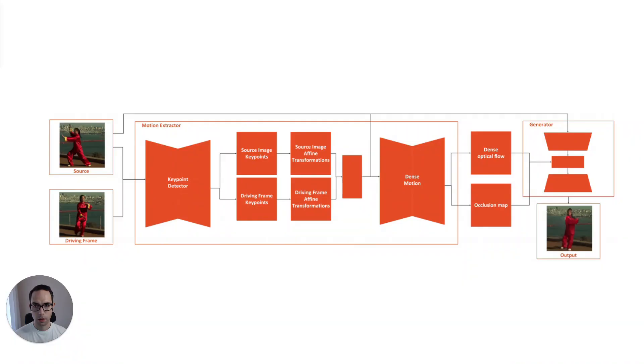The problem with building deepfakes in the past was that we needed additional information, meaning we needed some kind of priors. If we wanted to map head movements to some source image, we would need facial landmarks. Or if we wanted to animate full body movement, we would need pose estimation. This all changed when the paper 'First Order Motion Model for Image Animation' was released from the team at the University of Toronto. With this method, you don't need prior information, and when the model is trained, you can use it with transfer learning and apply it to an arbitrary object of the same category.